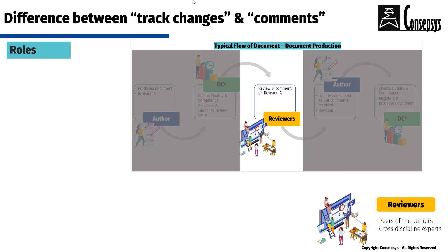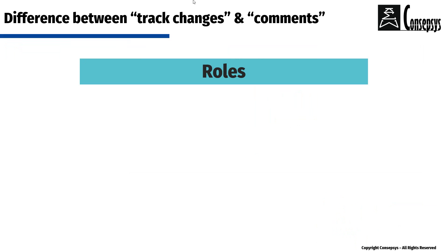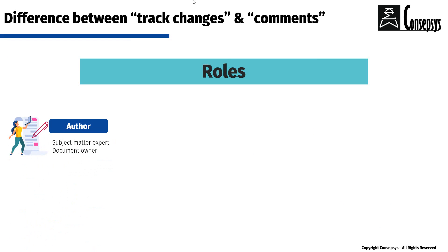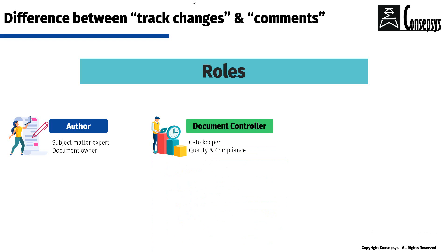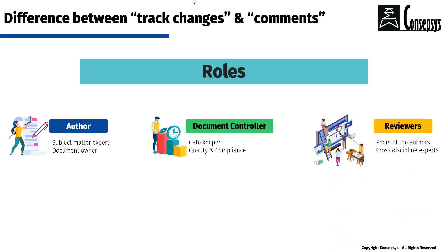And we have reviewers. They can be peers, colleagues, leads, or managers of the author. They often come from other specialty fields and can also be external interfaces. Typically at this stage we gather the views and comments from experts in complementary disciplines and from important interfaces. To summarize the roles: the author is a subject matter expert who writes and produces the documents; the document controller is a gatekeeper who checks documents and, if compliant, processes them for registration, filing, and distribution; and the reviewers are experts, sometimes in complementary disciplines, as well as colleagues, interfaces, and peers of the author.